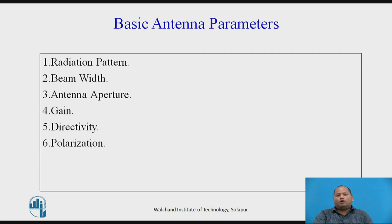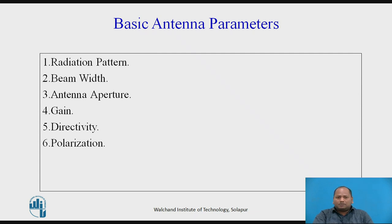Beam width refers to the radiation pattern's angular spread — it may appear like a circle or a random structure and can take different forms. Antenna aperture, as mentioned, covers both physical aperture and effective aperture.